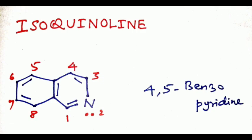In quinoline the nitrogen atom is present in the first position, whereas in isoquinoline the nitrogen atom is present in the second position.